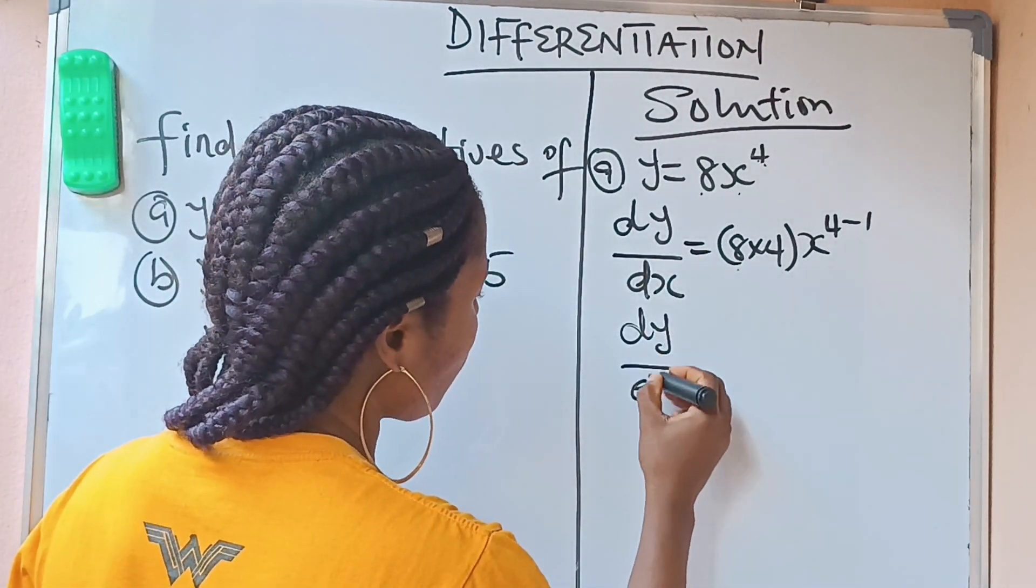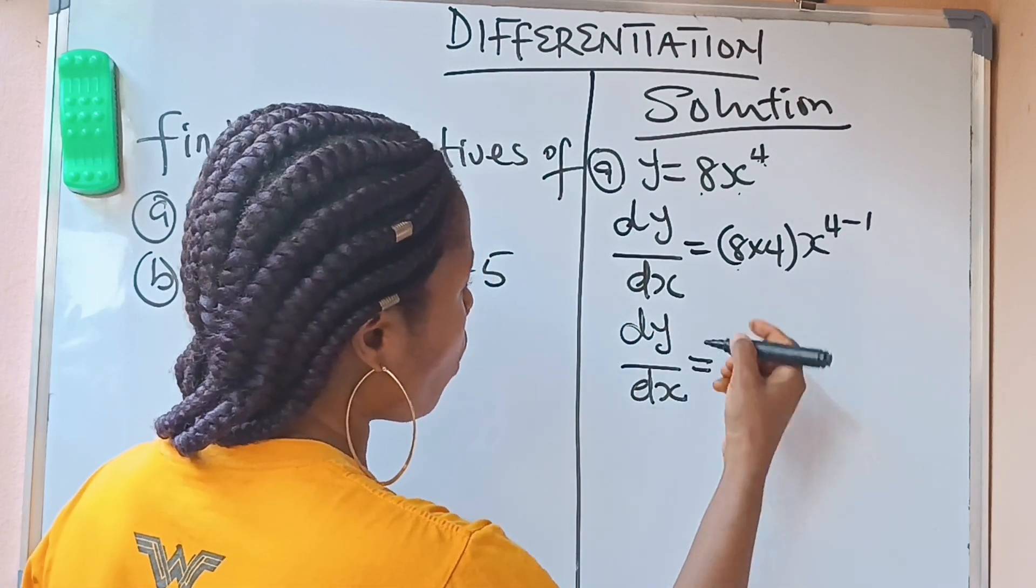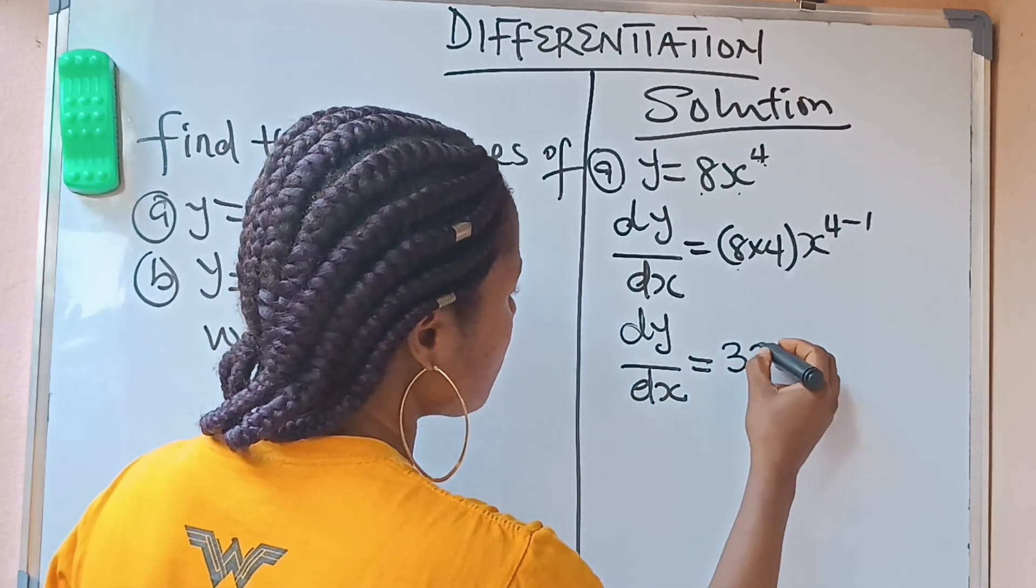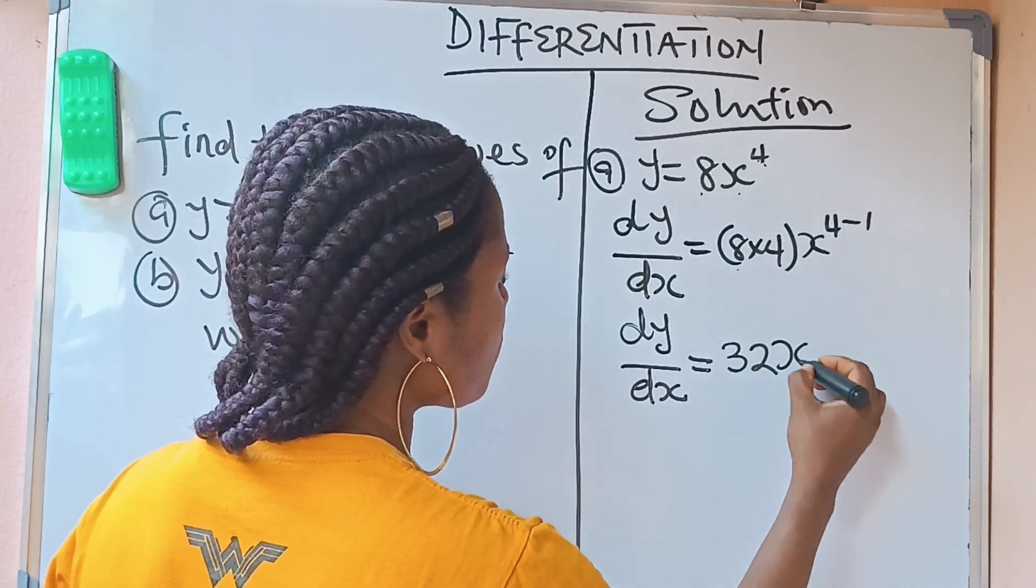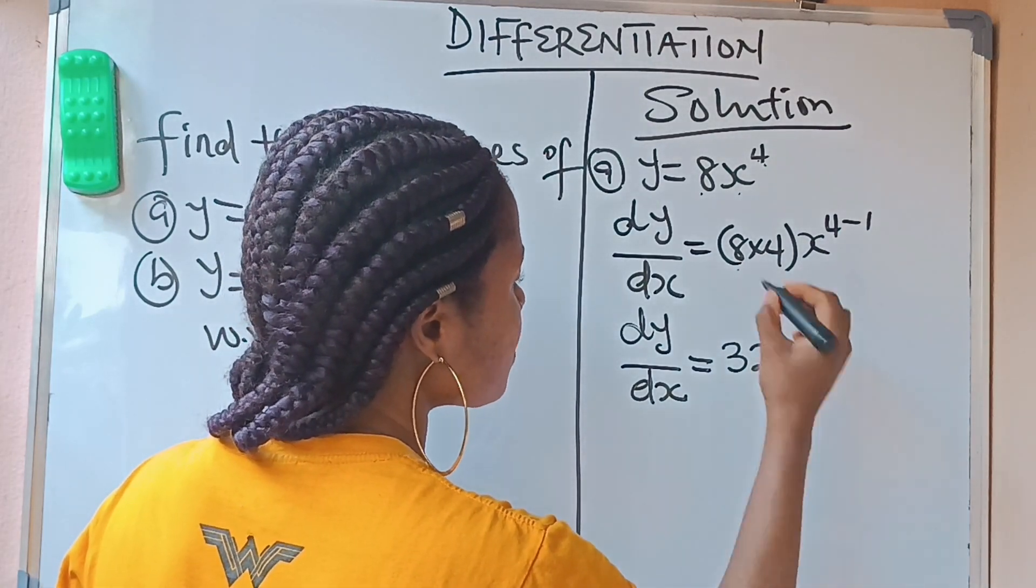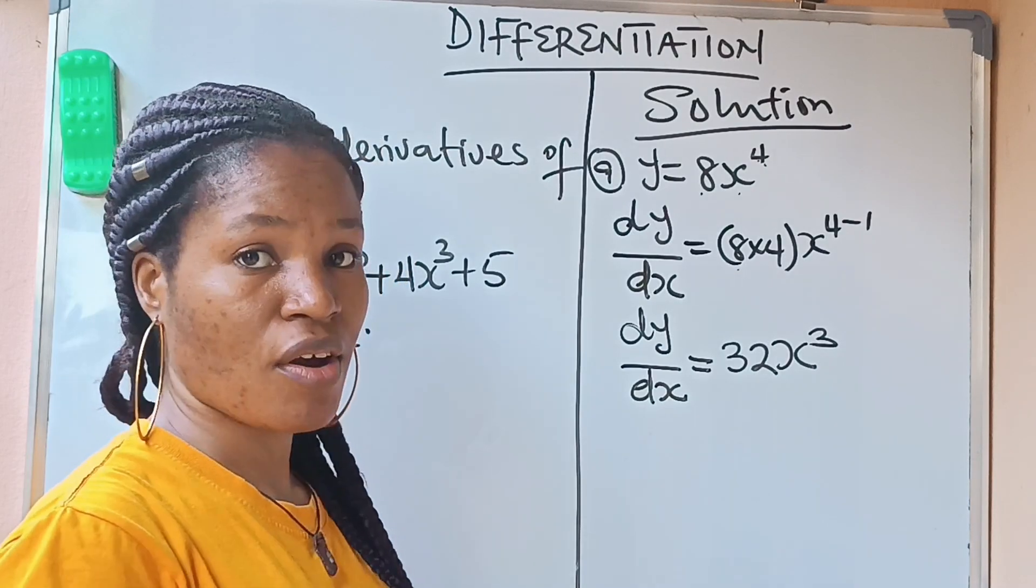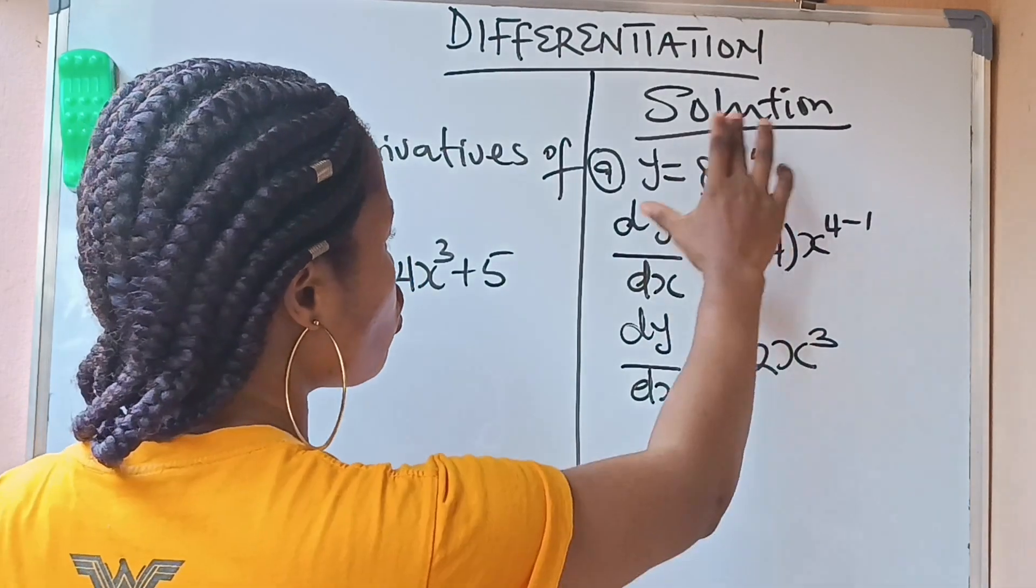So it means that dy over dx is equal to, 8 times 4 is what? 32. You write your x for them. 4 minus 1 is what? 3. And that is your answer. You see, I thought this is a very easy something.